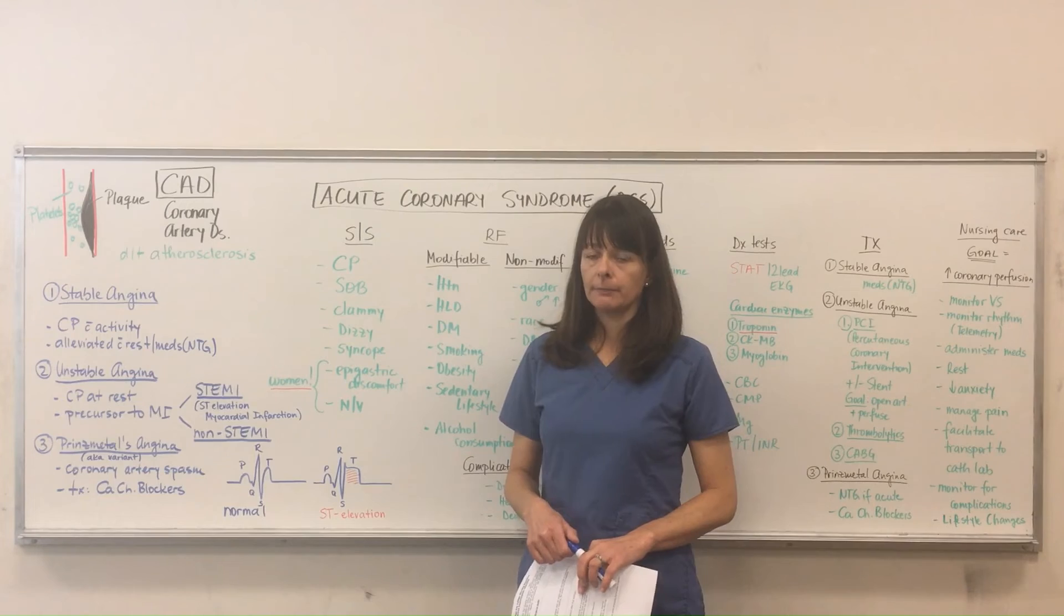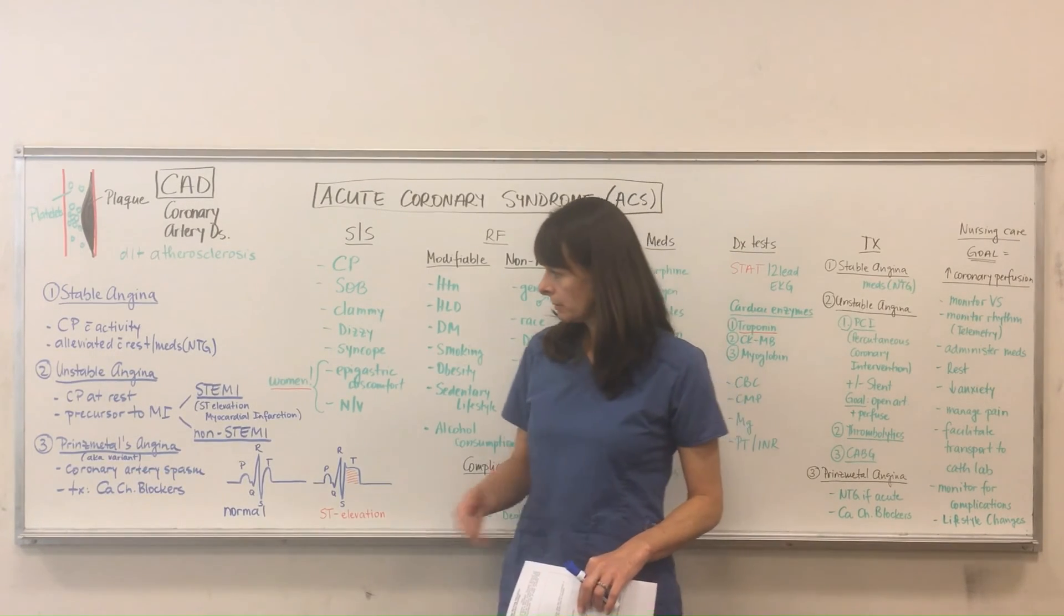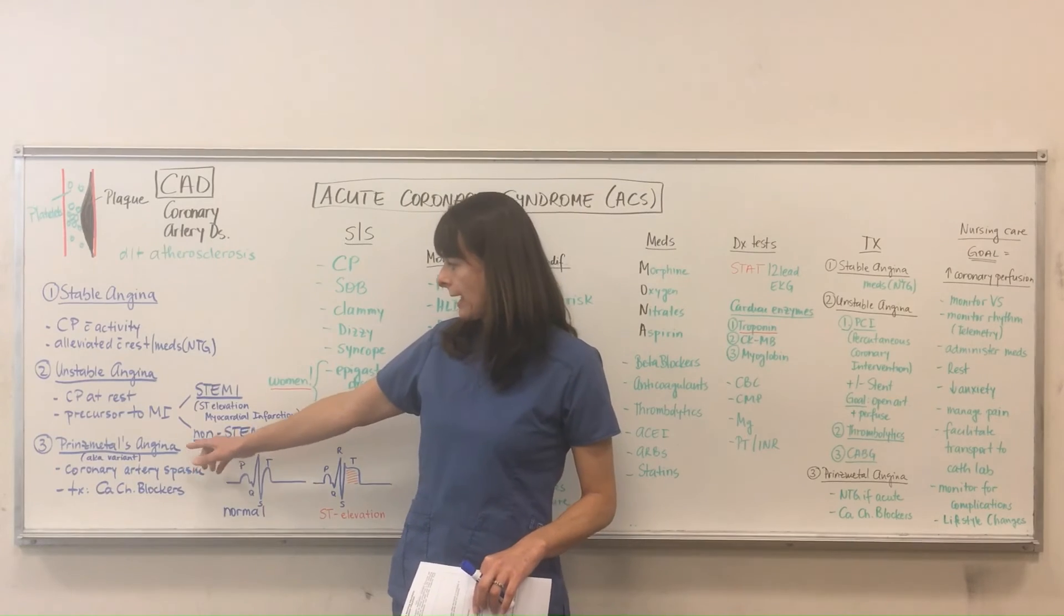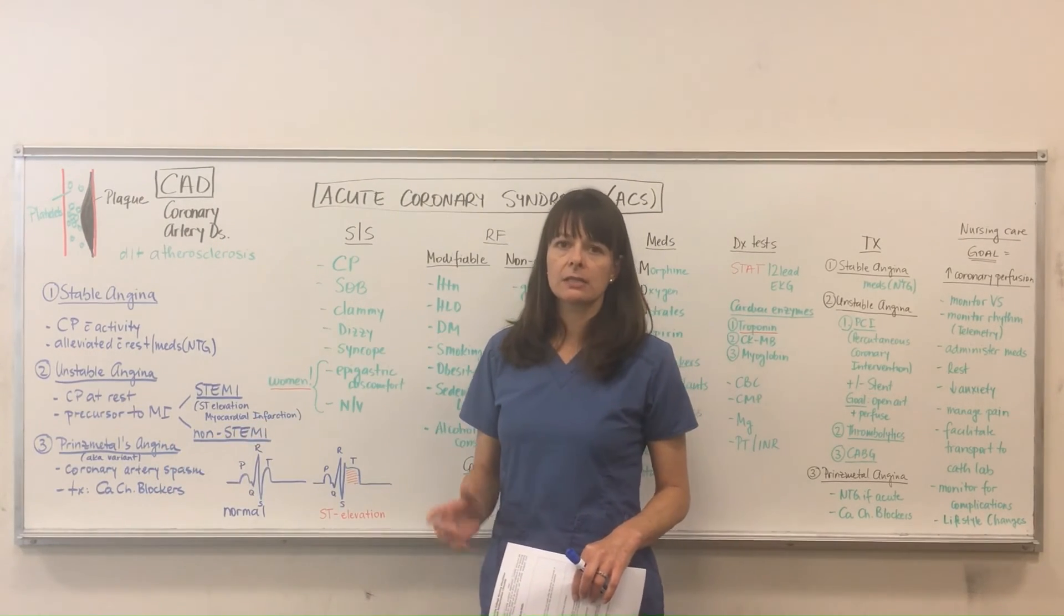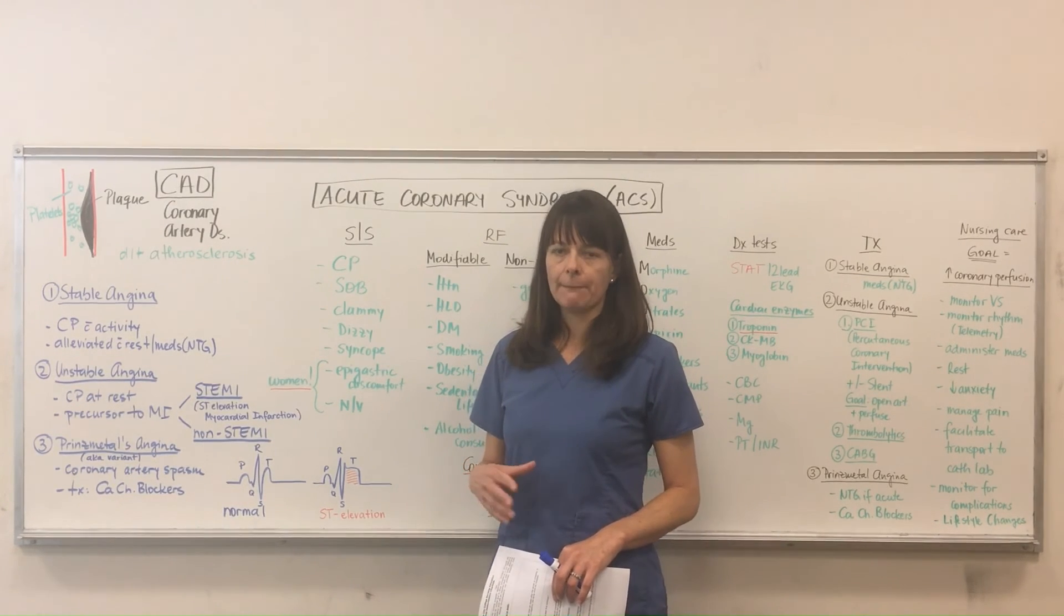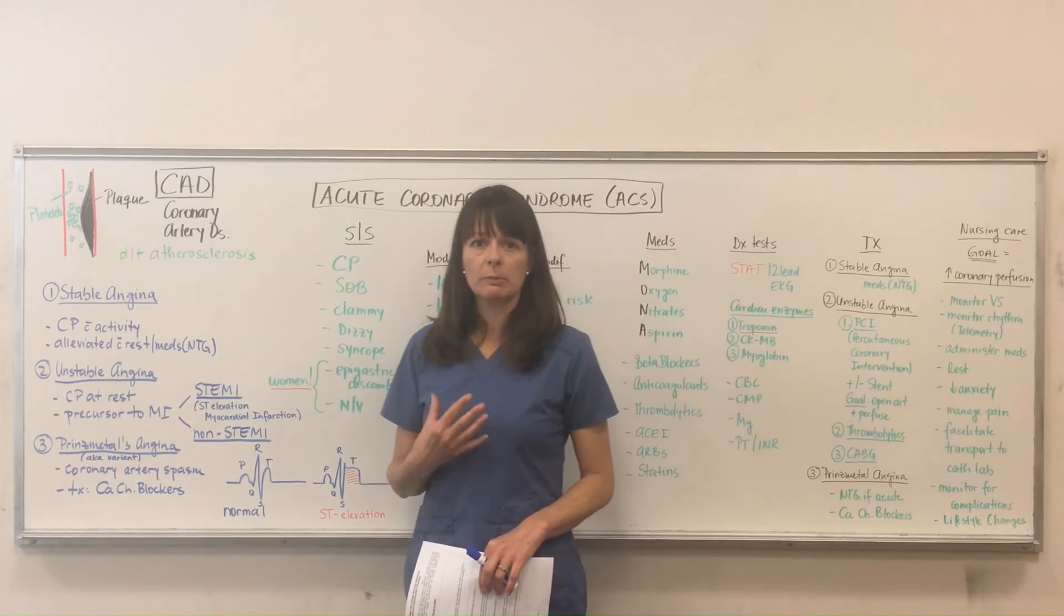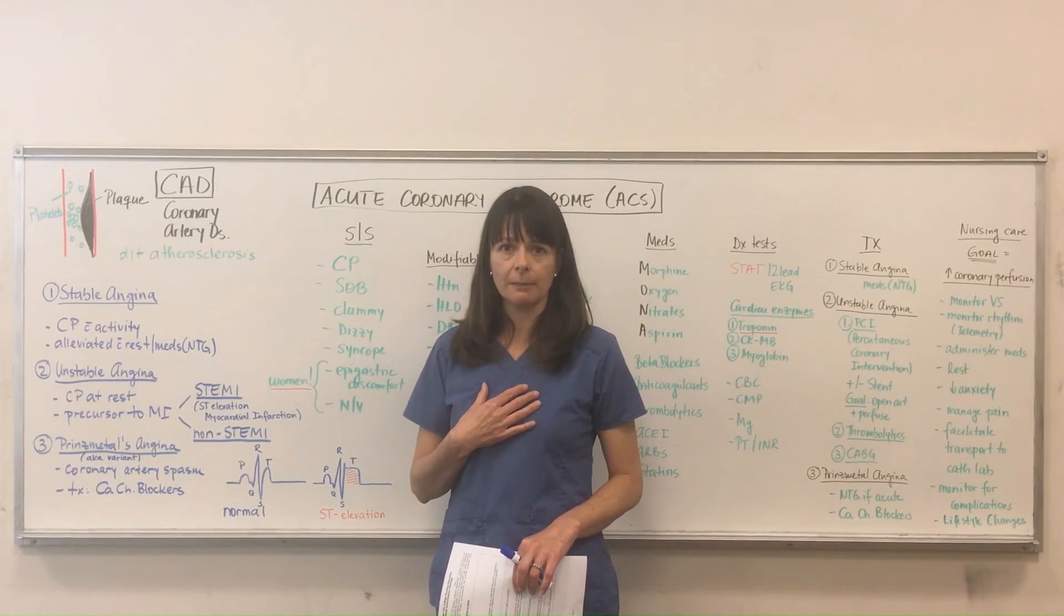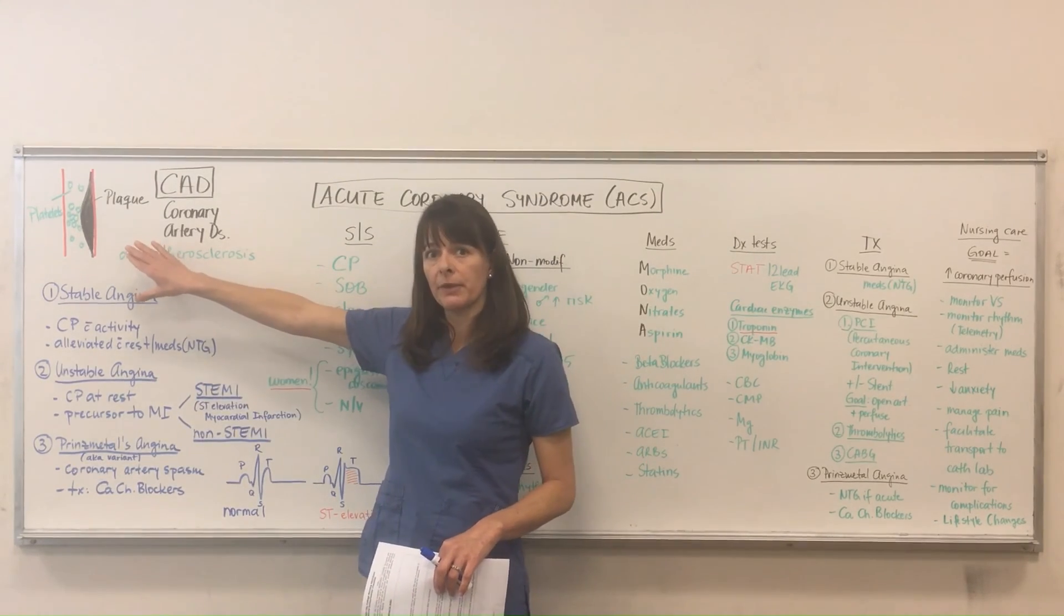The third possible angina or acute coronary syndrome is called Prinzmetal's angina, also known as variant angina. That basically is a different kind of angina, and the patient's pain is caused by coronary artery spasm, which is a completely different cause than this plaque buildup that we have there.